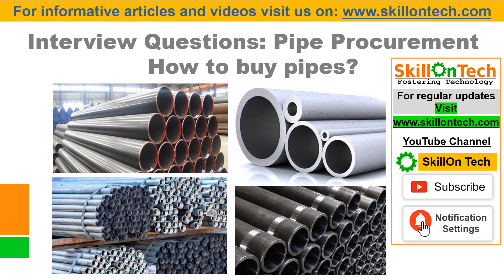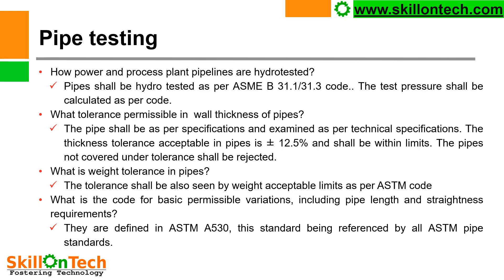In this series of videos on interview questions for piping engineers, this is another video on pipe procurement. How to buy pipes? Pipe testing — how are power and process plant pipelines hydrotested? Pipes shall be hydrotested as per ASME B31.1 and B31.3 code. The test pressure shall be calculated as per code.